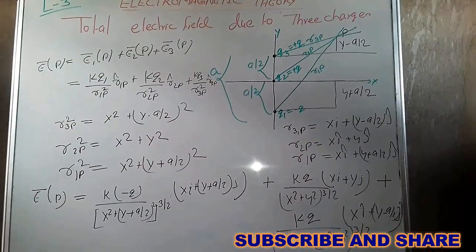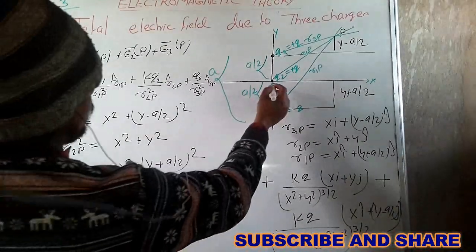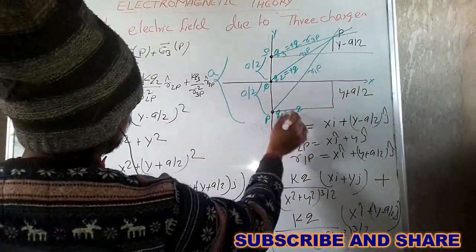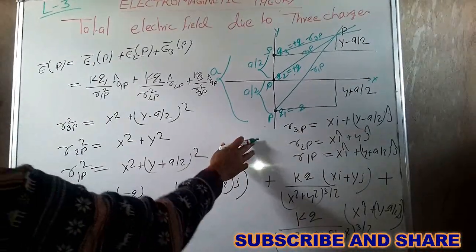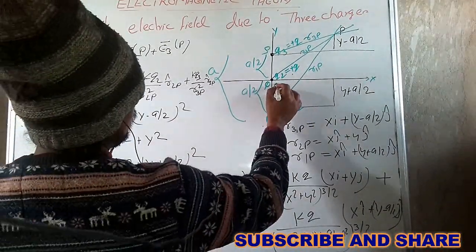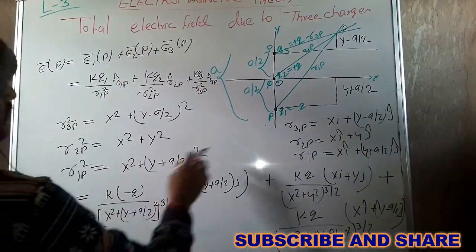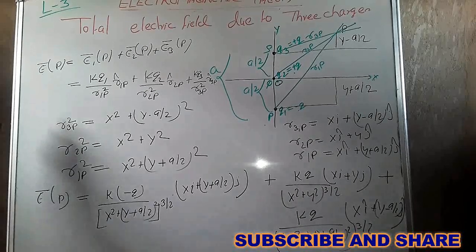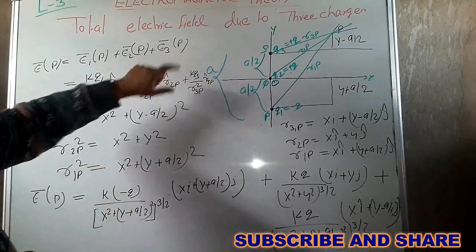Now we have a problem for the total electric field due to three charges. Suppose there are three charges: P, Q, and S. P has charge minus Q, Q has charge plus Q, and S has charge plus Q. We have to calculate the electric field at point P due to these three charges. The total electric field at P is equal to the sum of the individual electric fields: E1P plus E2P plus E3P.